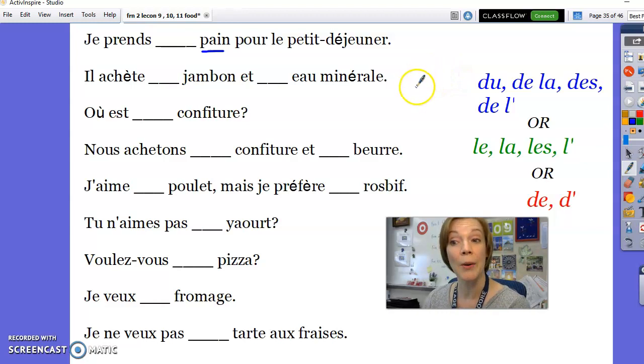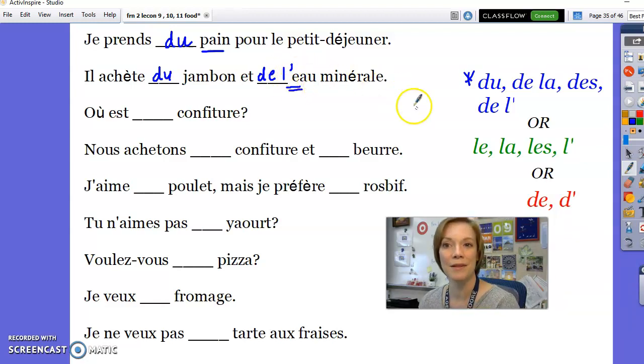So if you're having bread for breakfast, or the French are so tough they have pain for breakfast, you're going to say I'm having some bread for breakfast. Je prends du pain pour le petit déjeuner. And it's the same thing here. If you're buying something, il achète, he's buying some ham, some water. You want to use the word that means some. That's this partitive article right over here. Masculine, feminine, plural, starting with a vowel. We've got a little bit of both here. We have masculine, il achète du jambon, some ham, et de l'eau minérale, l apostrophe, because eau starts with a vowel, some mineral water.